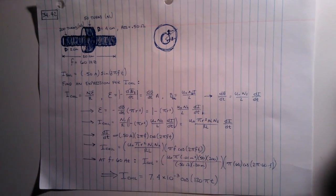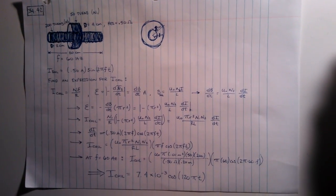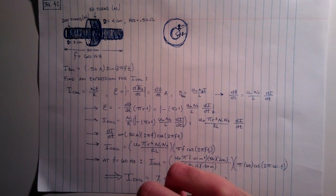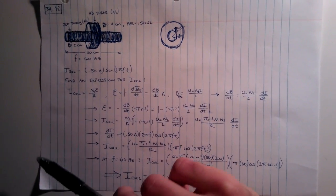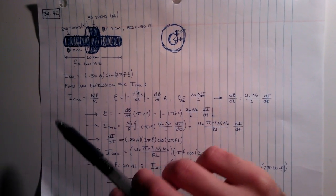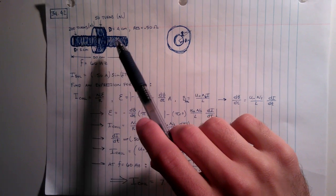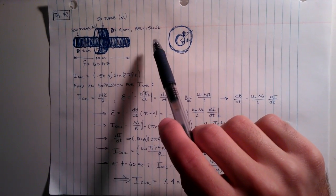Here we have problem number 42. In problem 42 you have a 20 centimeter long solenoid here. It has 200 turns and it has a diameter of 2 centimeters. It's surrounded by a 50 turn coil of wire that has a diameter of 4 centimeters and a resistance of 0.5 ohms.